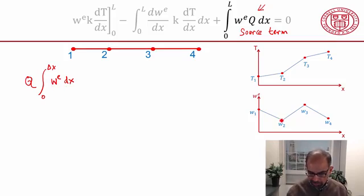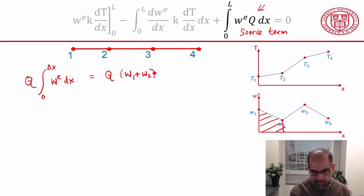And that means that I need, this integral will give me this area. And you can work out what that area is, and that comes out to be q, you'll get w1 plus w2 times delta x divided by 2. That's the area.